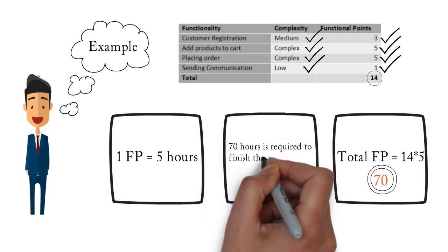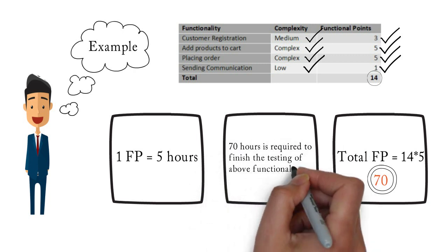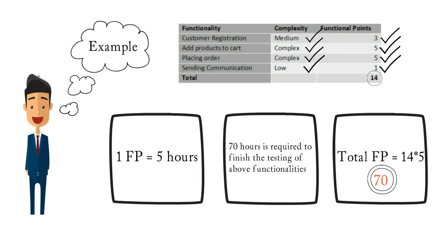The final step is to find out the total effort. We have total functional points of 14 and time required to complete one functional point is 5 hours. Multiplying 14 by 5 gives us 70 hours required to complete the activities of all four functionalities. The steps in functional point analysis are: deriving complexity for the task, giving functional points based on complexity, finding total functional points, deriving effort per functional point, and finding total effort.